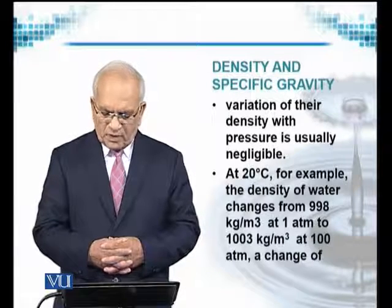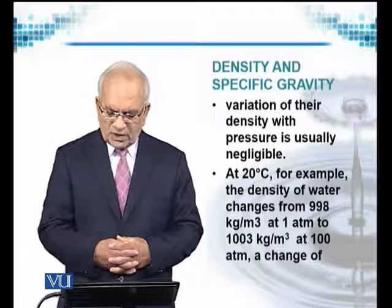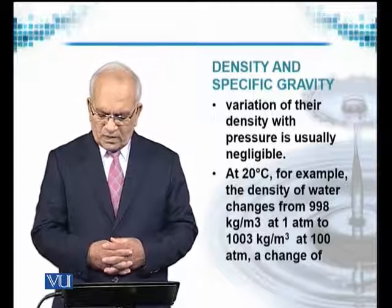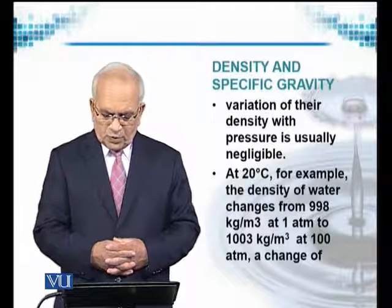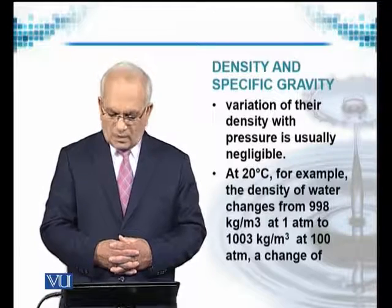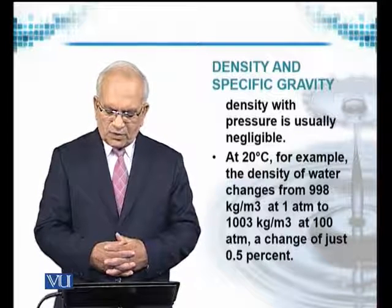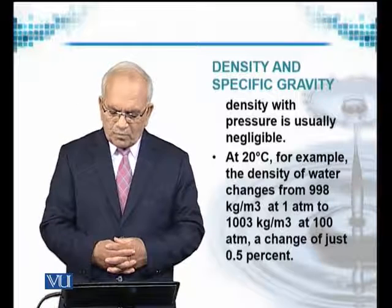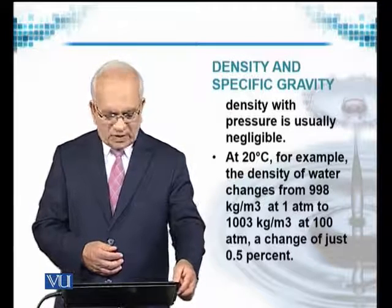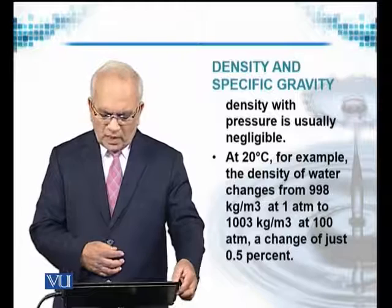As an example, at 20 degrees centigrade — considered the standard temperature for this kind of measurement — the density of water changes from 998 kg/m³ at 1 atmospheric pressure to 1,003 kg/m³ at 100 atmospheric pressure. This change in density with pressure is about 0.5% and is usually negligible, so it can be ignored.